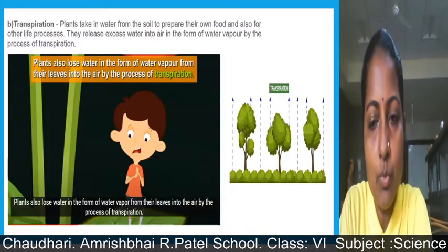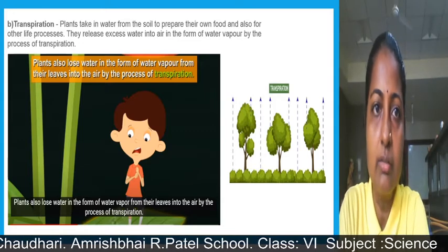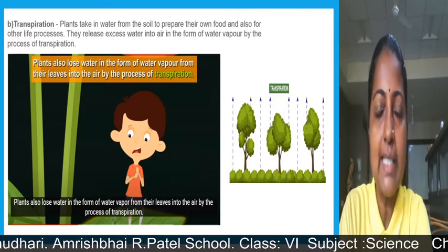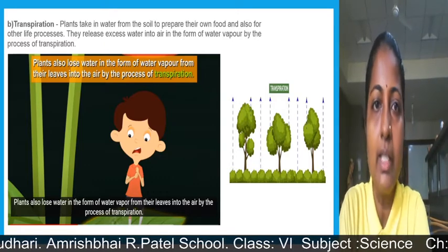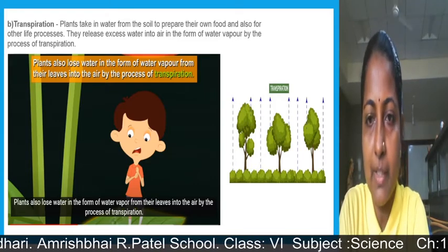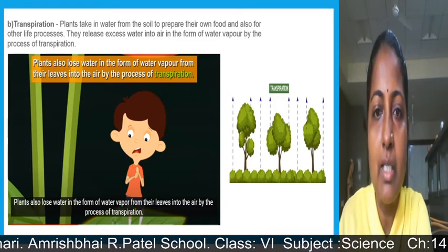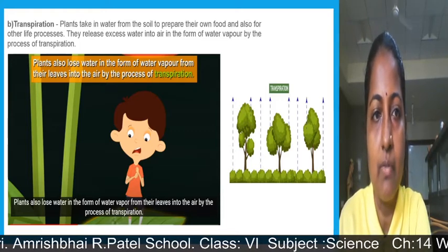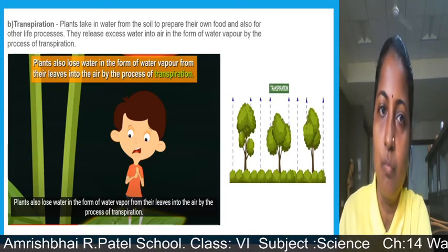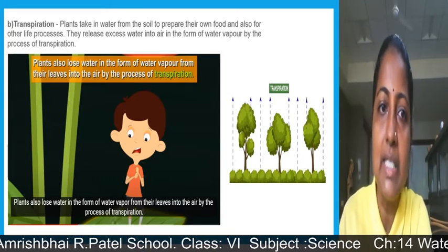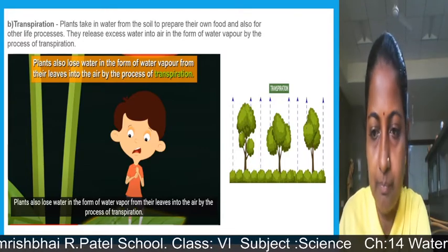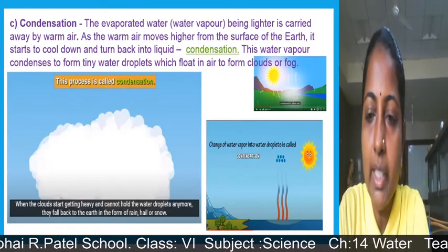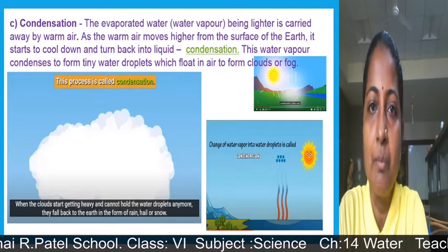Now we will see about transpiration. Plants take in water from the soil to prepare their own food and for other life processes, and they release excess water into the air in the form of water vapor by the process of transpiration. As you can see in the figure, plants are releasing water into the atmosphere — they also lose water in the form of water vapor from their leaves.